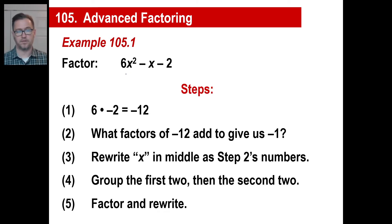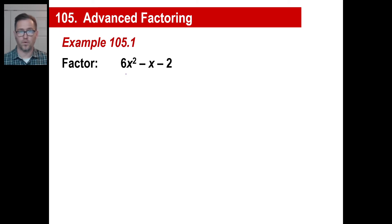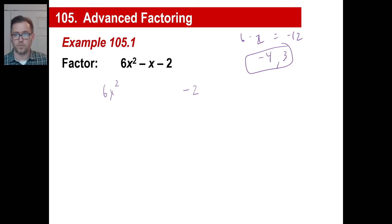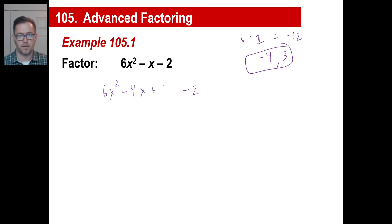Let's go through the process. Step 1: 6 times negative 2 is negative 12. Step 2: factors of negative 12 that add to negative 1 are negative 4 and positive 3. So we copy 6x squared, copy negative 2 at the back, and instead of writing negative 1x, we write negative 4x plus 3x — these two are equivalent. It doesn't matter what order you write them; you could put positive 3x first. Let's write them as negative 4x plus 3x. See how that works? This is the same as that.